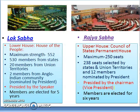Lok Sabha is also called the lower house or the house of the people. The maximum strength of Lok Sabha is 552 members, out of which 530 members are from states, 20 members from Union territories, and 2 members from the Anglo-Indian community who are nominated by the President of India. The Lok Sabha is presided by the Speaker and members are elected for 5 years.